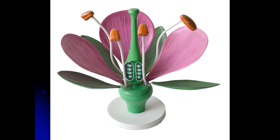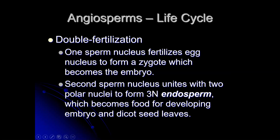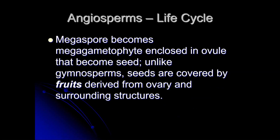Another way plants are more complex: the reproductive system is multi-parted and quite different from animals. Unlike gymnosperms, our seeds are covered by fruits derived from the ovary and the surrounding structures.